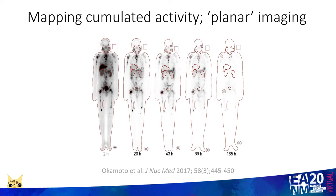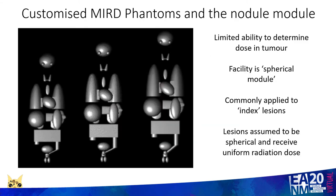MIRD assumes a standard man and standard woman — the diagrams here are clearly an oversimplification of what happens in real people in terms of their anatomy and the relationship of organs to each other. Finally, the MIRD schema has only a very limited capacity to assess dose within tumour, relying upon a spherical model which is commonly applied to index lesions to give an idea of the radiation dose within tumours. But what are these index lesions? Are they the hottest lesions? Are they the coldest lesions? Are they the hottest plus the coldest? This is obviously a simplification.